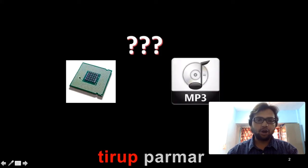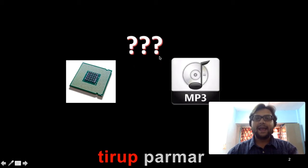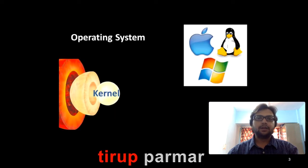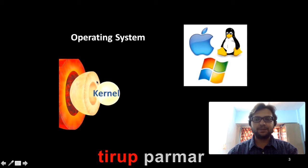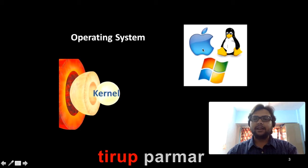I'm communicating with all of you right now, which is possible only because of an operating system. If we want to play a music file on a processor, the processor needs to understand the request — that is only possible with the help of a middleware, and that middleware is called the operating system. The operating system comes with many different layers, and the core part is called the kernel. In simple terms, the kernel is the heart of the operating system.